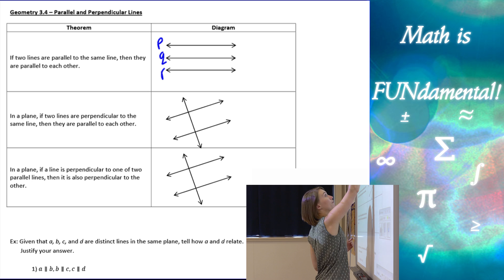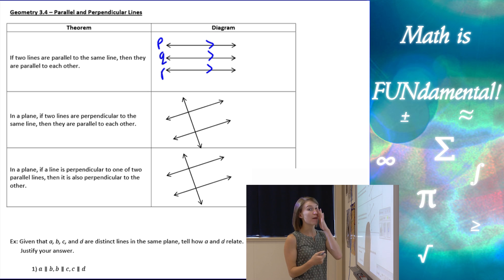So, three lines, P, Q, and R. If P is parallel to Q and R is parallel to Q, then P has to be parallel to R.